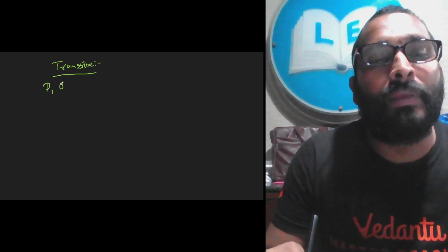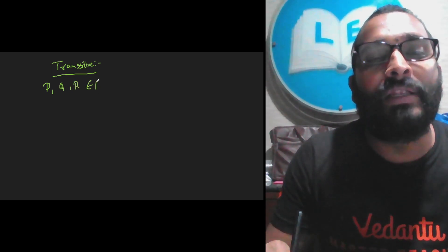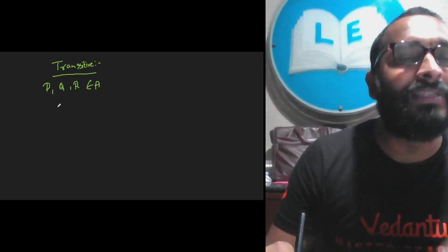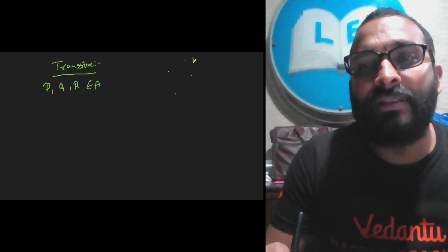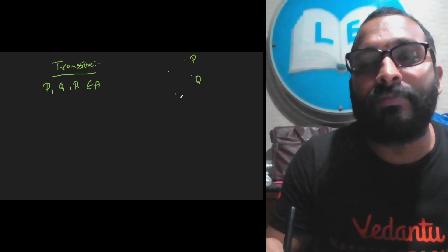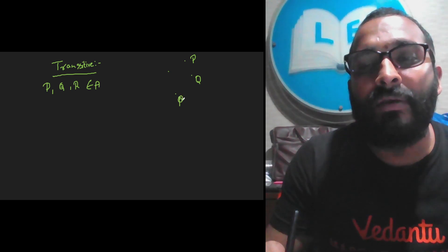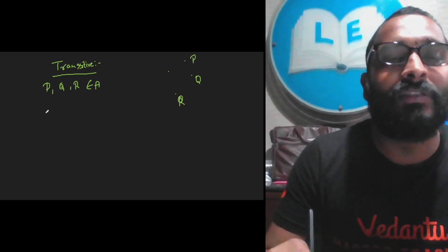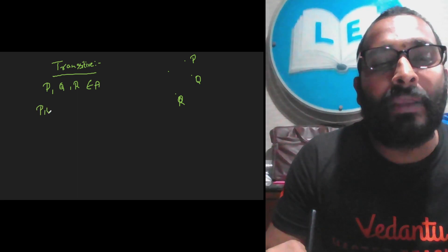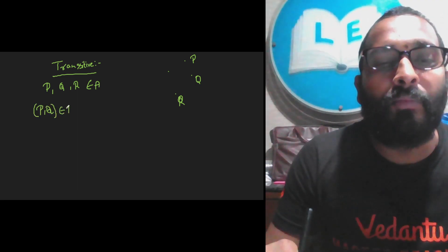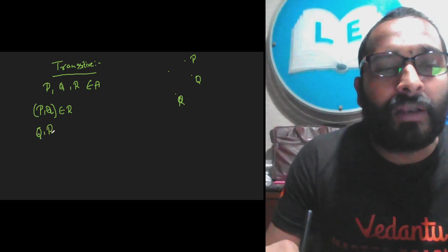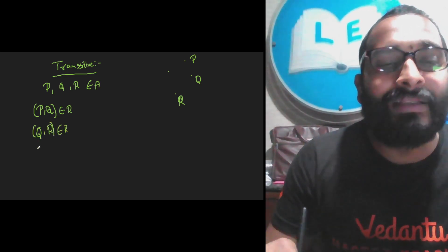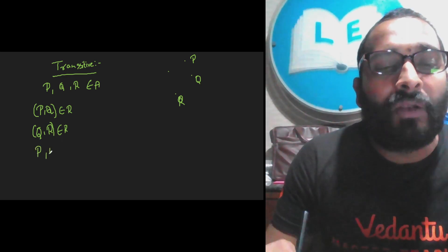Let us consider three points P, Q, and R which belong to set A. All three points are at the same distance from the origin. For your understanding — this point is P, this point is Q, this is R. Let us assume all three are at the same distance from the origin. In that case, P and Q are at the same distance, so (P, Q) belongs to R. Q and R — (Q, R) belongs to R. In that case, (P, R) also belongs to R.